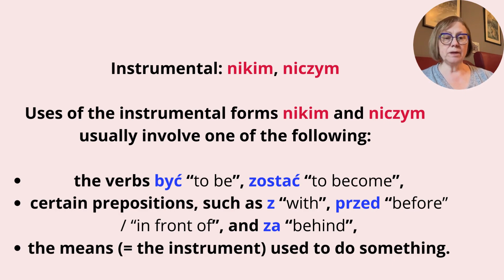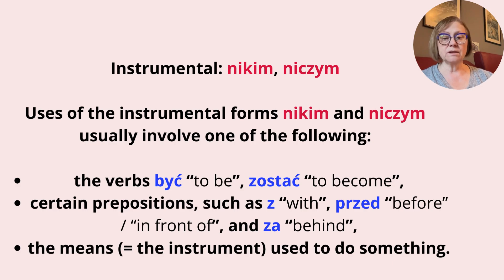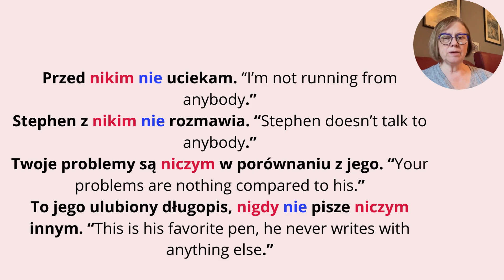Instrumental: Nikim, Niczym. Uses of the instrumental forms Nikim and Niczym usually involve: 1) the verbs być (to be) and zostać (to become); 2) certain prepositions such as z (with), przed (before/in front of), and za (behind); 3) the means or instrument used to do something. Przed nikim nie uciekam. — I am not running from anybody.